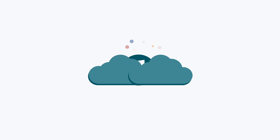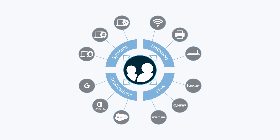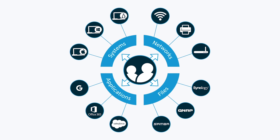The good news is that a next-generation cloud identity and access management solution is emerging that is effectively a reimagination of Active Directory for modern networks. It's called JumpCloud Directory as a Service, and it has the power to centralize IAM throughout modern networks with a comprehensive set of identity management capabilities, all of which are delivered from the cloud.